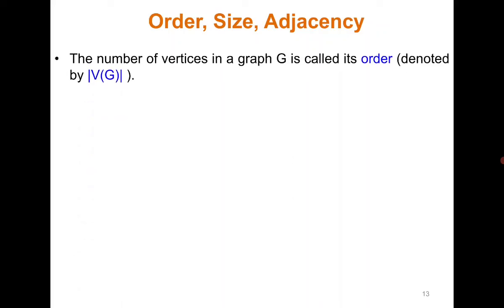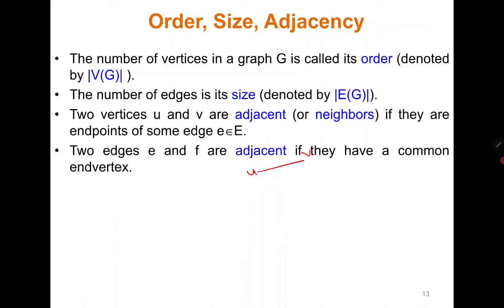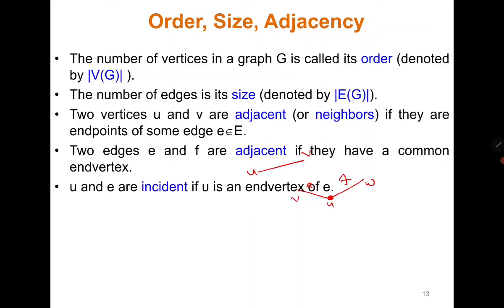The number of vertices in a graph is called its order, and the number of edges is called its size. Two vertices are adjacent if there is an edge between them — if there is an edge {u, v}, then u and v are adjacent. Two edges are adjacent if they share a common end vertex. A vertex and an edge are incident if the vertex is an end vertex of that edge. A loop is an edge with the same vertex at both endpoints.